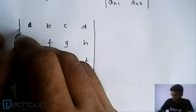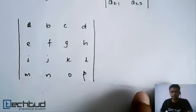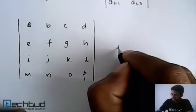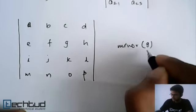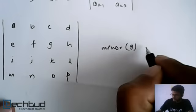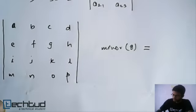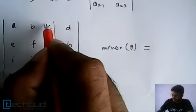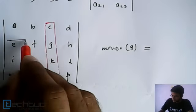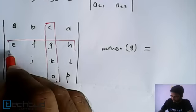Now if we have to find out minor of g, minor of g, then what we will do? We'll just leave this column and leave this row.